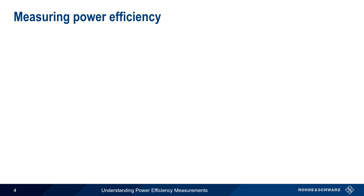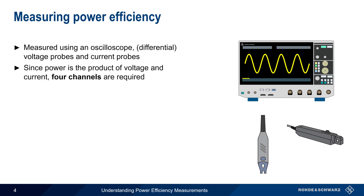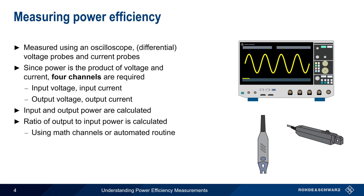Power efficiency is normally measured using an oscilloscope, voltage probes – often differential voltage probes – and current probes. Since power is the product of voltage and current, we need four oscilloscope channels to measure power supply efficiency. Two channels are used to measure the input voltage and input current, and two more channels are needed to measure output voltage and output current. Input and output power are both calculated from the measured values of voltage and current, and then power efficiency is calculated by taking the ratio of output to input power. This can be done either using a scope's math channels or an automated measurement function or routine.